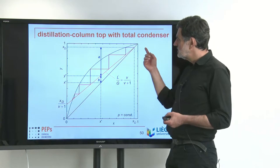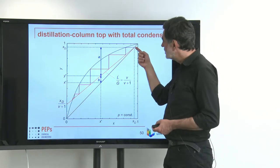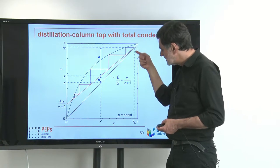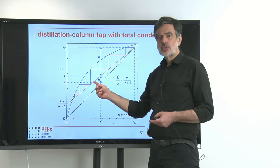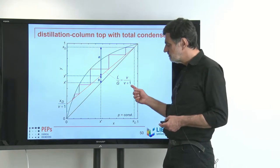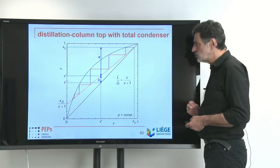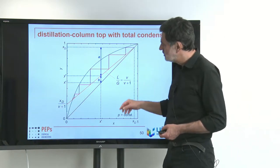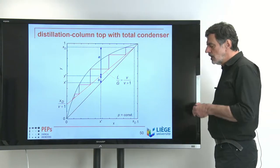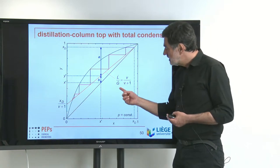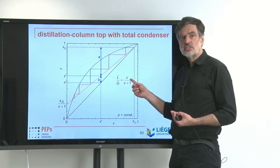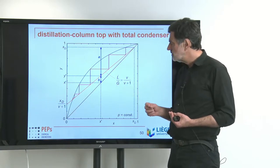The change happens exactly at x_D, where we remove the side withdrawal — so at x_D there is a kink in the operating line from one slope to the other. Above, we would have an operating line lying on the diagonal, with a kink on the diagonal at x_D, which leads to the operating line below having slope L̇/Ġ. Evaluating that with the reflux ratio v, this is v/(v+1), and the intersection with the y-axis is exactly at x_D/(v+1). This defines the internal reflux ratio, in contrast to v, which is the external reflux ratio.